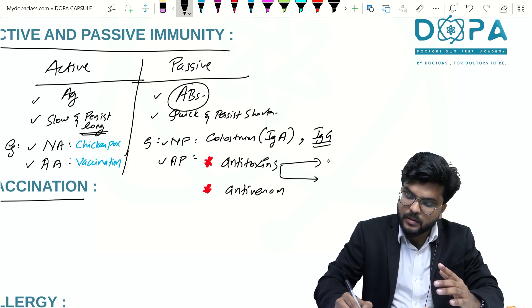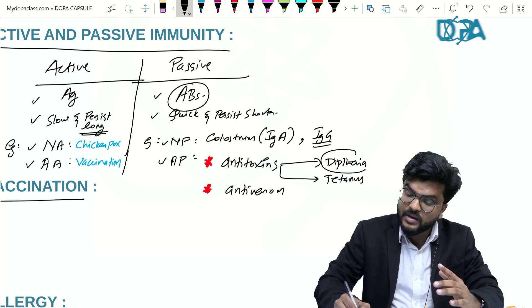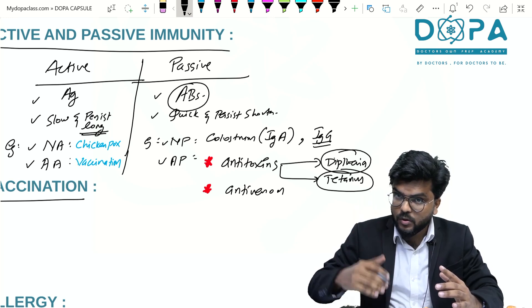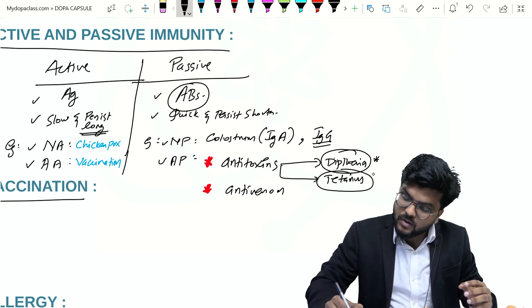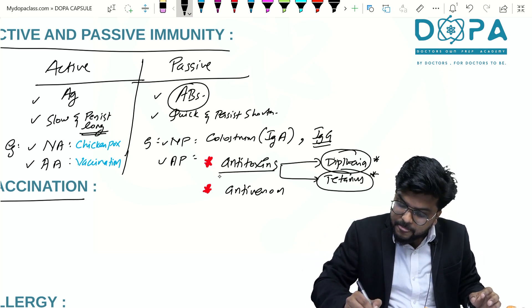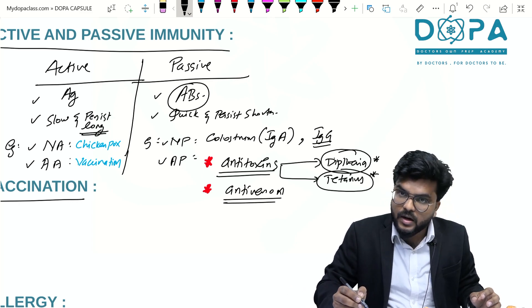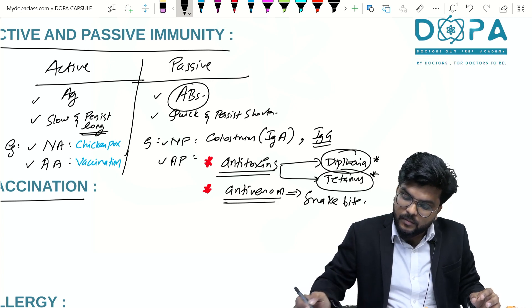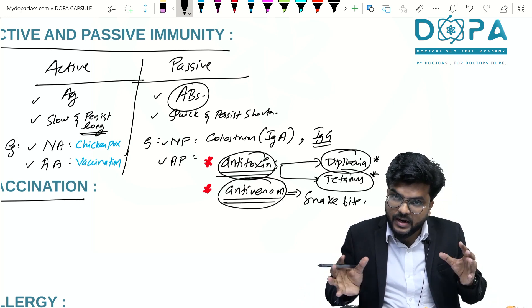Antitoxins are used in dangerous situations like diphtheria and tetanus. These can be prevented by vaccination, but if an unimmunized or unvaccinated child encounters the bacteria causing these infections and gets infected, it is advised to administer antitoxins as soon as possible. Similarly, antivenom is administered to an individual when they are struck with a snake bite.